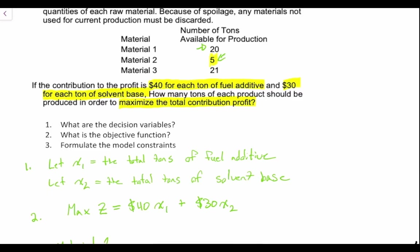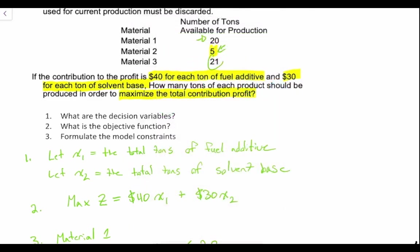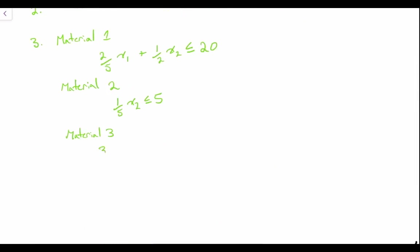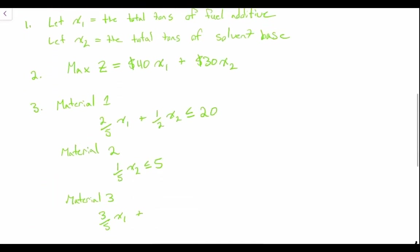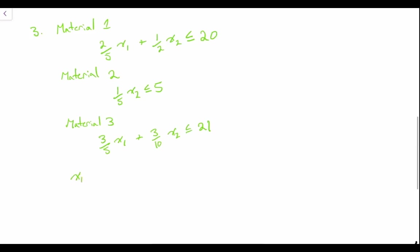And then finally our third constraint: material three — three-fifths x1 plus three-tenths x2, and we observe that we have no more than 21 tons of material three. So we have three-fifths x1 plus three-tenths x2 must be less than or equal to 21. Of course we have another constraint not listed in the problem: x1 must be greater than or equal to zero and x2 must be greater than or equal to zero. Those are our non-negativity constraints.